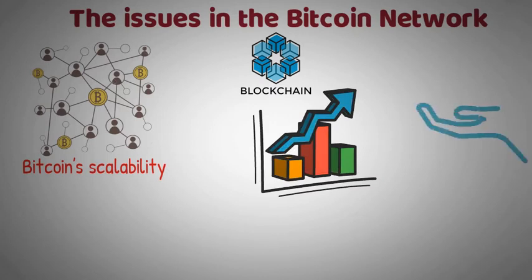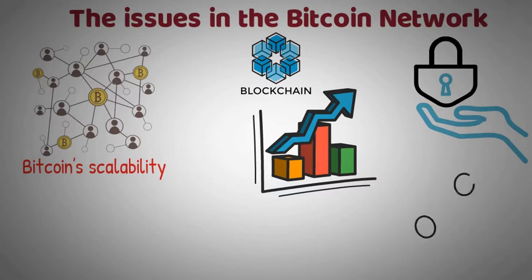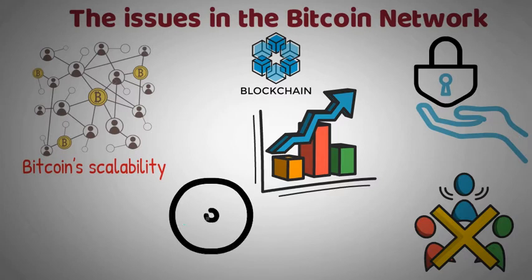Scalability has always been a big issue for the Bitcoin network because the network has a limited capacity and can't easily handle large amounts of transactions in a short period. This is because the blocks in the Bitcoin blockchain are actually limited in both size and frequency.